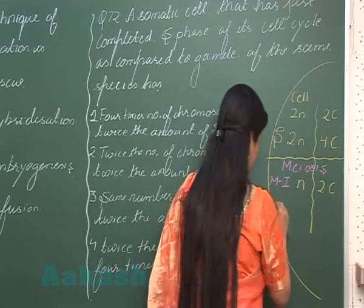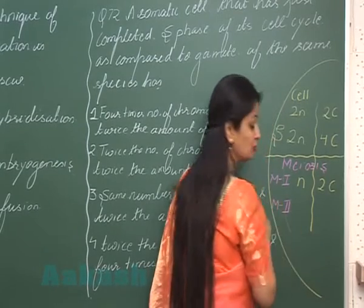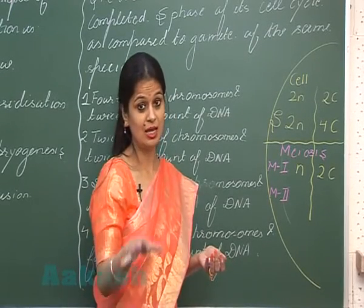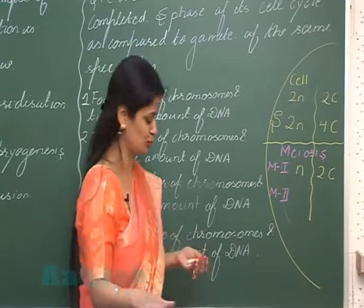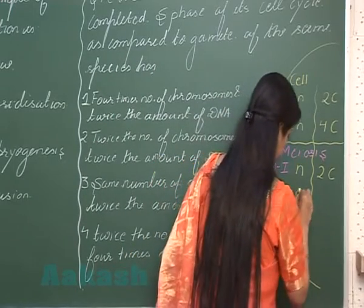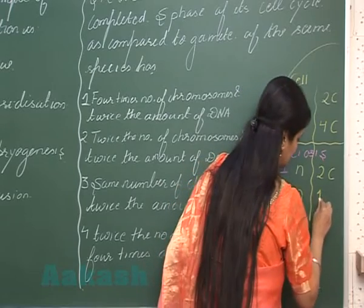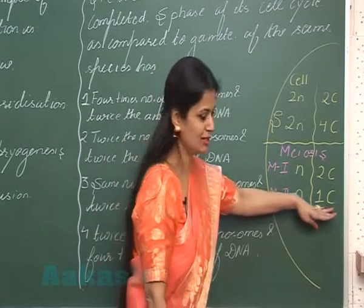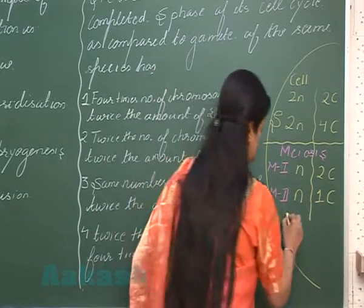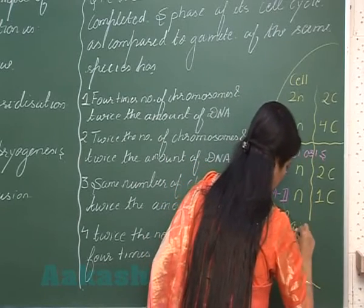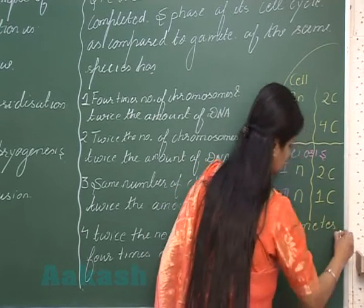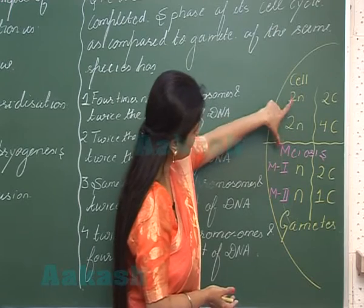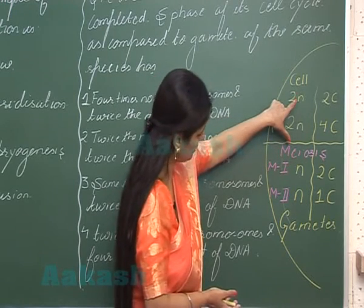The second part — meiosis II — is just like mitosis. Here the number of chromosomes remains the same, but the DNA content is again reduced to half. So meiosis is complete, and the products formed are gametes.